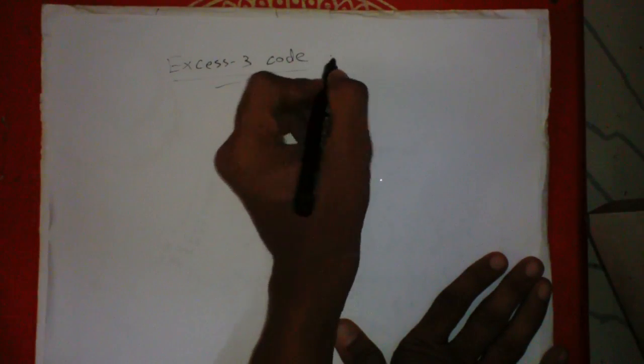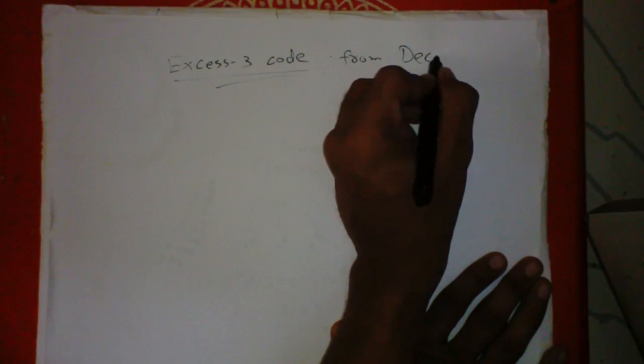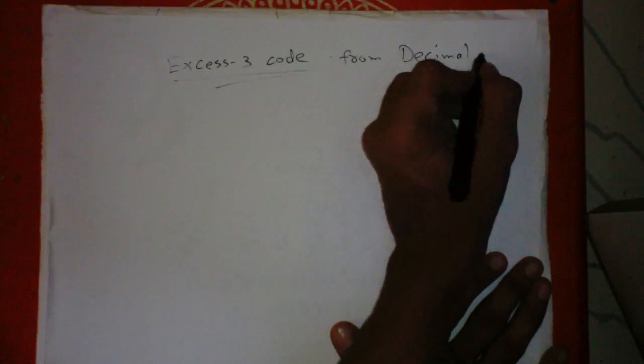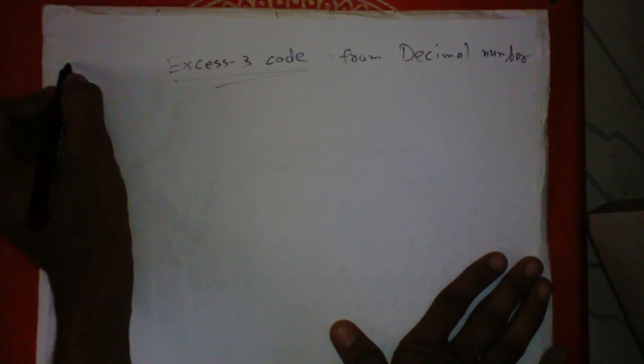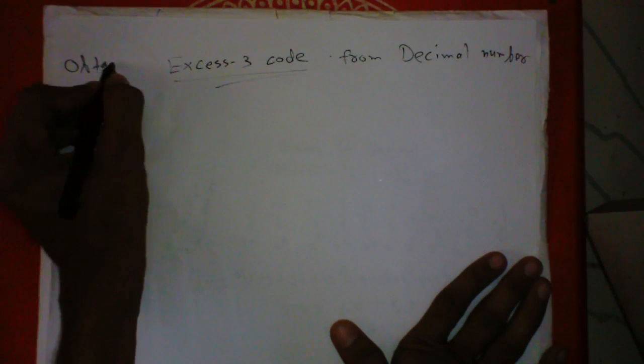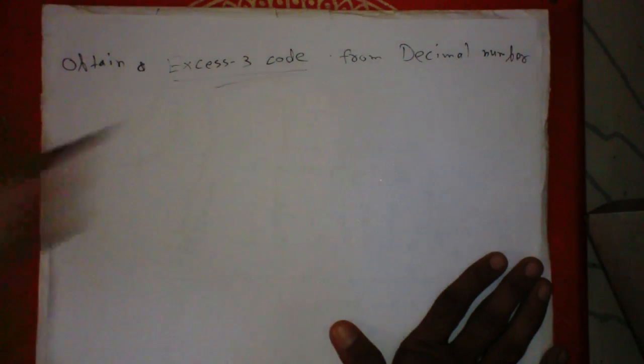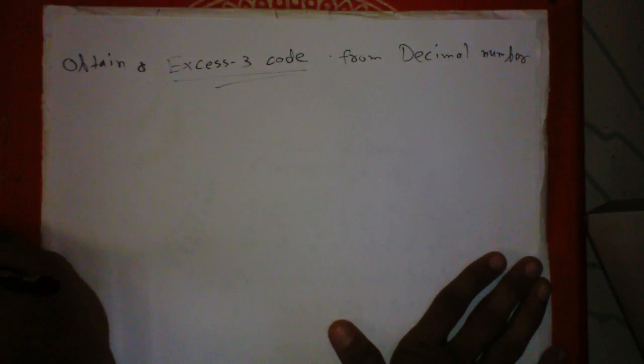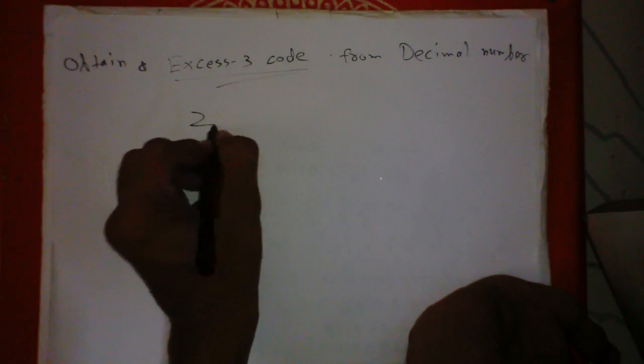How to obtain an Excess-3 code from a decimal number? The procedure is pretty simple. Let's take a decimal number: 27.